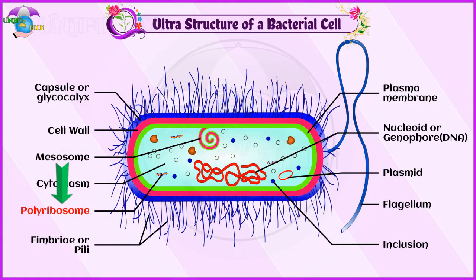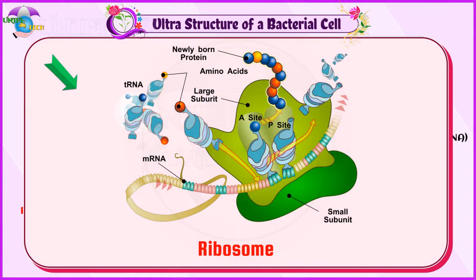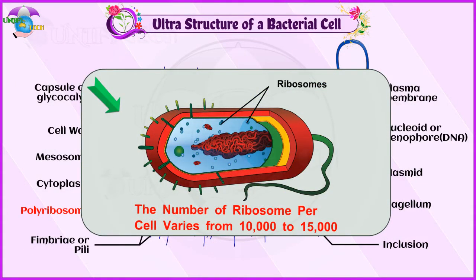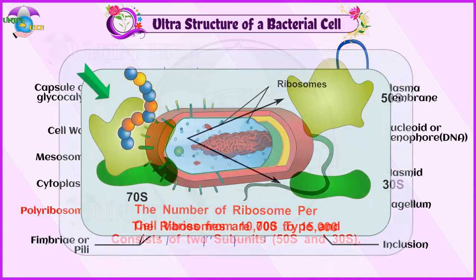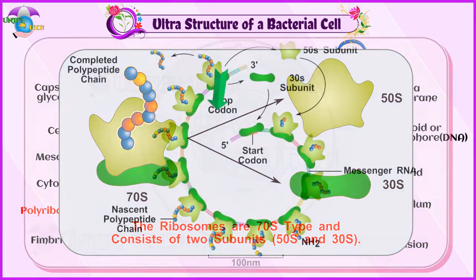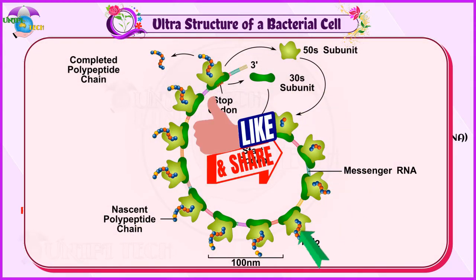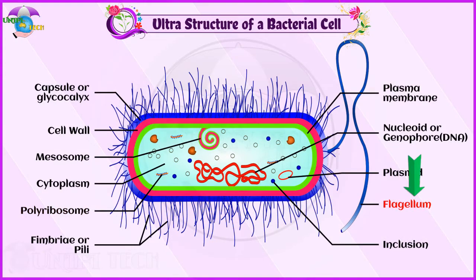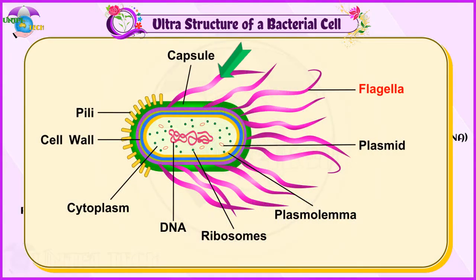Polysomes: Polysomes are polyribosomes. The ribosomes are the sites of protein synthesis. The number of ribosomes per cell varies from 10,000 to 15,000. The ribosomes are 70S type and consist of two subunits. They are held together by mRNA to form polyribosomes.